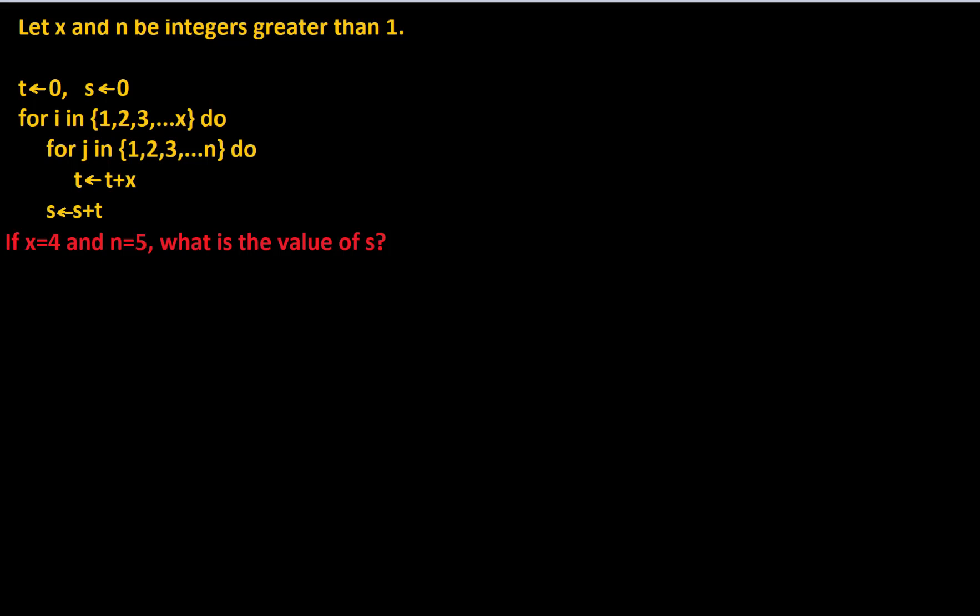Hi everyone, in this video I'd like to take a look at a piece of pseudocode and see what's happening when we set some particular values here for x and n. So let's start at the beginning. We're going to let x and n be integers greater than 1. And we're going to start off by letting t equal 0 and s equal 0.